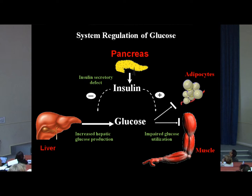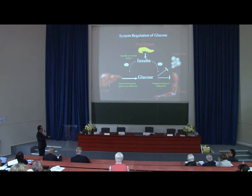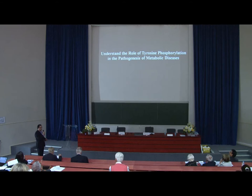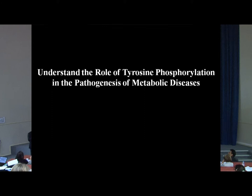One major aspect for signaling in these different tissues and how they communicate with each other is a process of tyrosine phosphorylation. We really try to get the details of alterations in signaling, with a particular focus on alterations in tyrosine phosphorylation and dephosphorylation and how aberrations in these pathways lead to the development and pathogenesis of diabetes and other metabolic diseases.